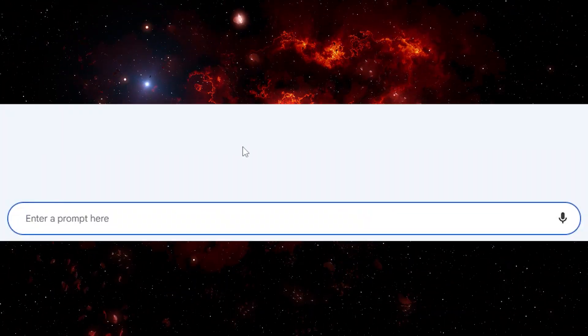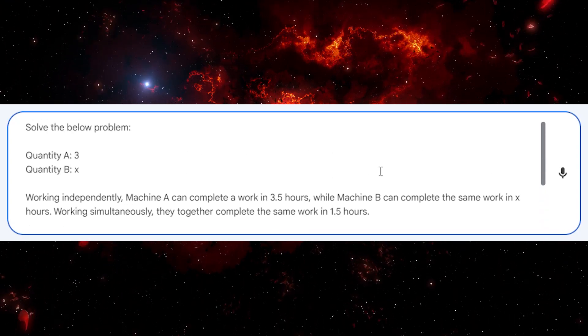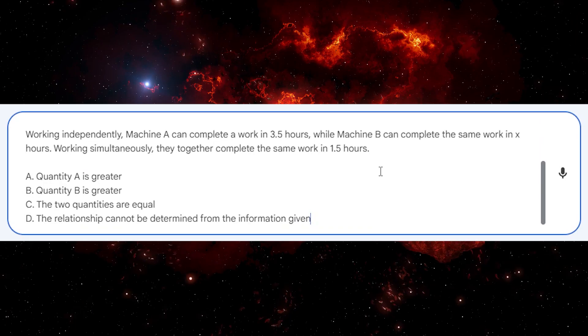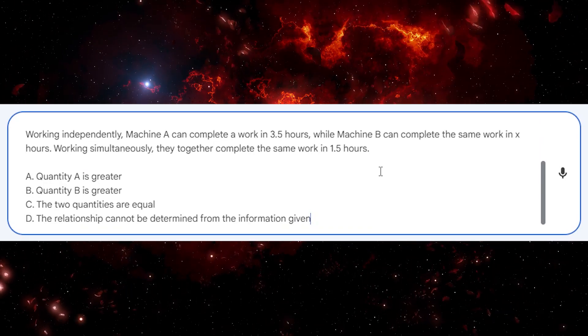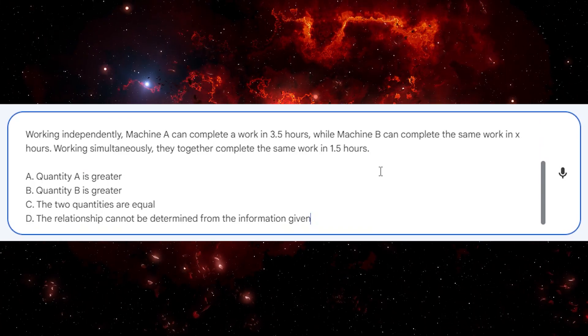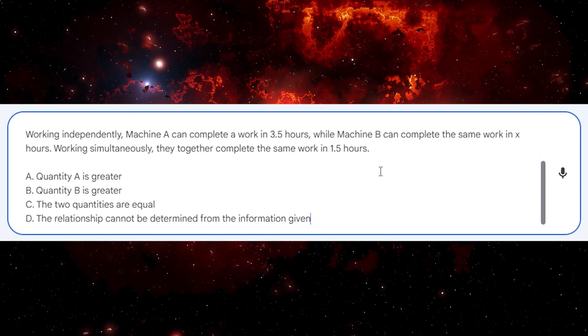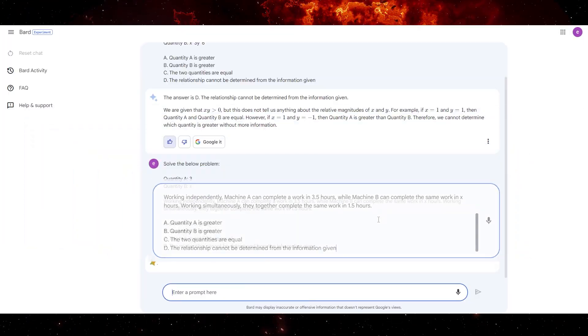This time we have quantity A being three and quantity B being X. Working independently, machine A can complete a work in three and a half hours, while machine B can complete the same work in X hours. Working simultaneously, they together complete the same work in one and a half hours. And like before, we need to determine which quantity is greater, if they're equal, or if the relationship can't be determined.